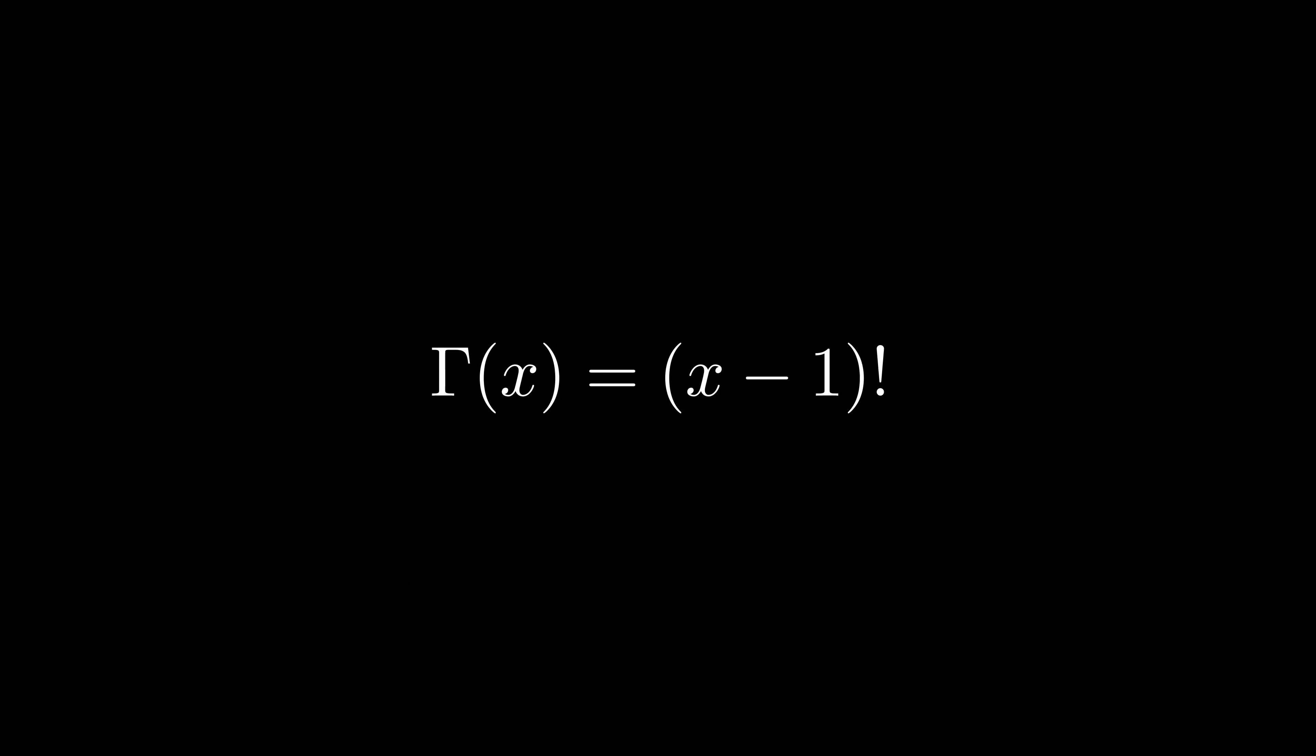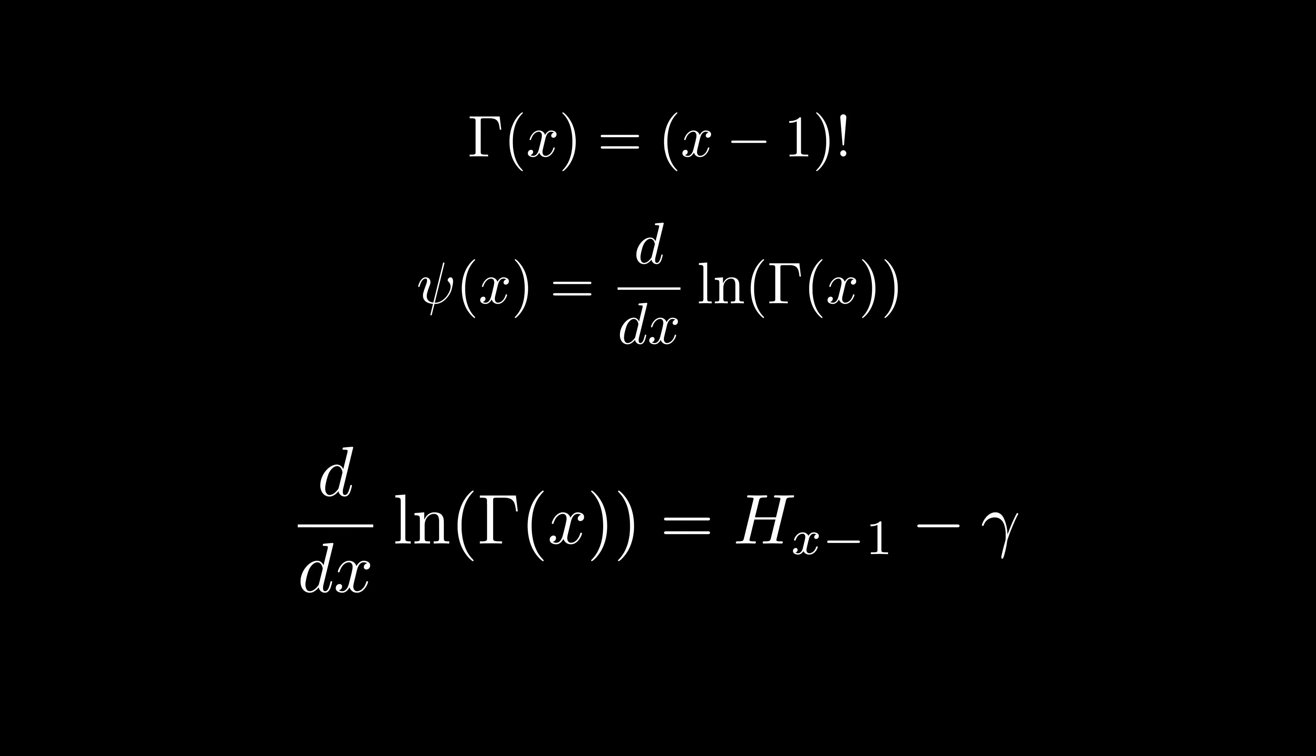We'll also use a similar replacement for the harmonic numbers. This is called the digamma function, and it's written with the Greek letter psi for some reason. The digamma function is defined to be the derivative of the logarithm of the gamma function. This definition follows directly from the connection between the harmonic numbers and the factorials, since, with a little shuffling around, we can see that the digamma function is h of x minus 1 minus gamma.